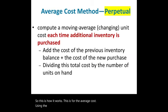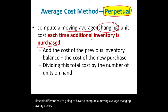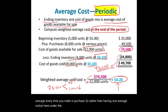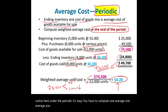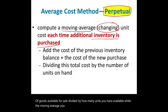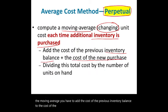Now let's look at average cost perpetual — the moving average. Every time you make a purchase, you must calculate a new average. You add the cost of the previous inventory balance to the cost of the new purchase, then divide total cost by units on hand. We started with 5,000 units at $5 ($25,000). On January 10th we purchased 1,000 units at $6 ($6,000 additional).